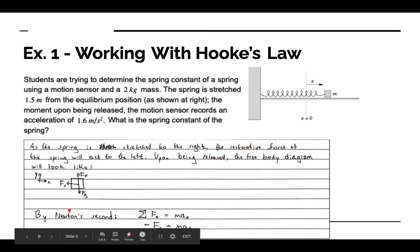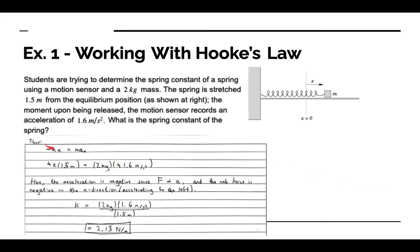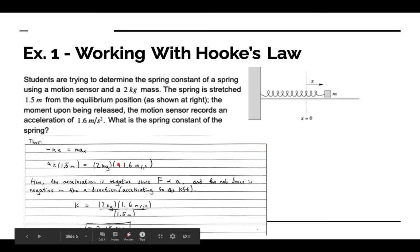Focusing on Newton's second law in the x-direction: the sum of forces equals mass times acceleration, and the only horizontal force is the spring force acting to the left. So we have: −F_s = m × a_x. Replacing F_s using Hooke's Law gives: −k × x = m × a_x. Substituting values: −k × 1.5 m = 2 kg × (−1.6 m/s²). Note the acceleration is negative because the force acts to the left, accelerating the system leftward back toward equilibrium.